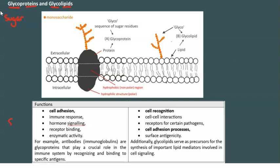Let's start with glycoproteins. The protein component is an integral protein, as illustrated in the diagram. Chains of sugar residues are attached to the extracellular side of the protein, and the sequence of those sugars is actually very significant. They are frequently branching structures.